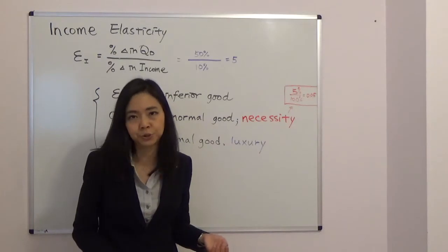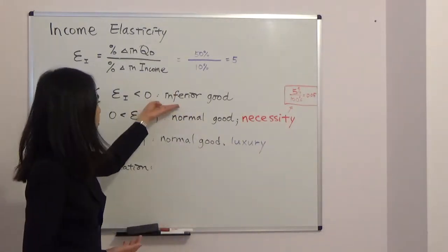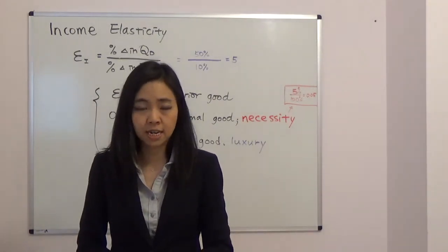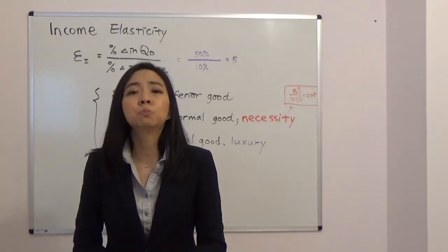What if you're selling an inferior good? Then you're going to benefit from a recession. So think about McDonald's during year 2008 and 2009. McDonald's was actually expanding. Why? Because people consume more of inferior goods when their income went down.